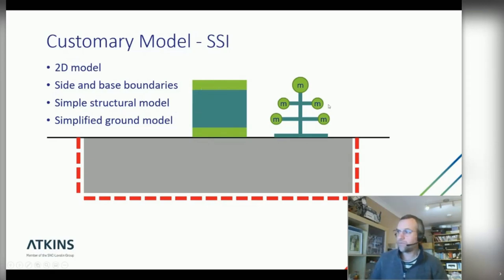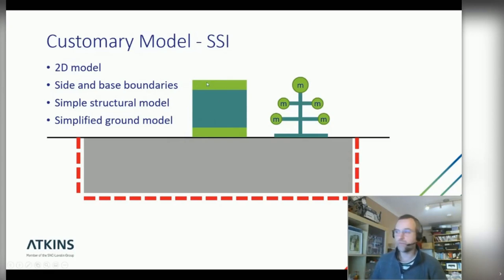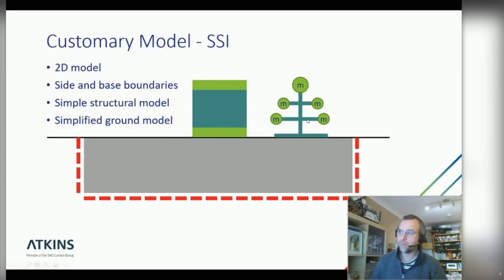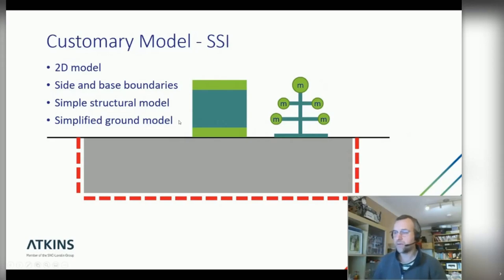Within the SSI model, simplified structural models were used. A sandwich model has mass at the top and bottom with stiffness in between, tuned to replicate the fundamental frequencies of the building. A Christmas-tree model uses beams of certain stiffnesses attached to masses, again tuned to provide certain frequency responses. It's far from perfect, and a simplified ground model is needed as well.